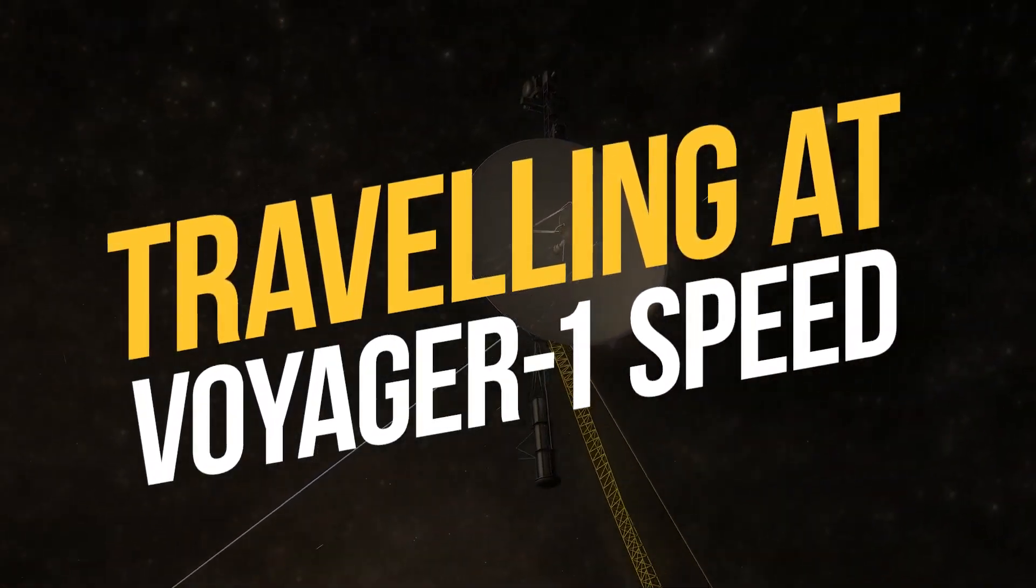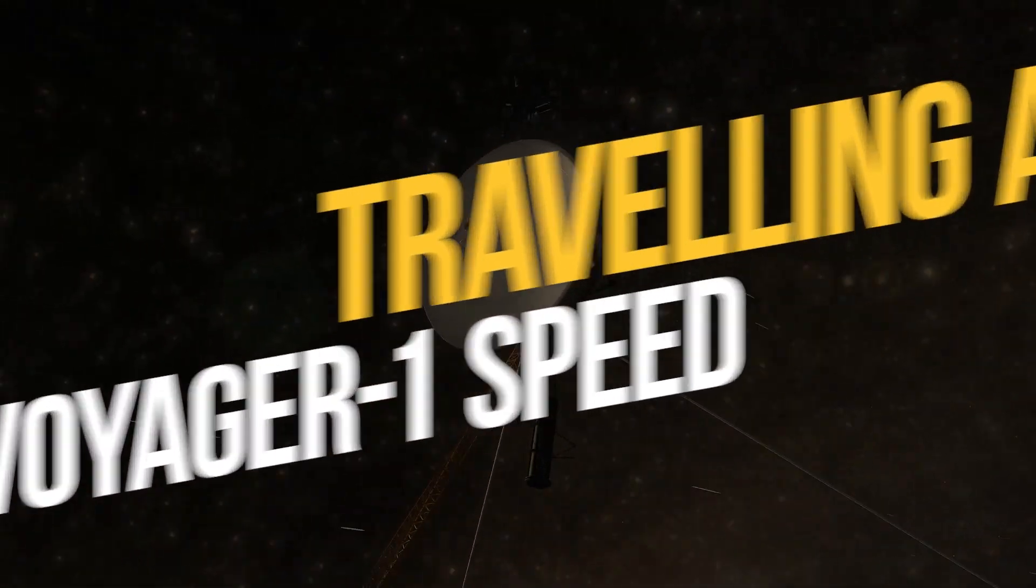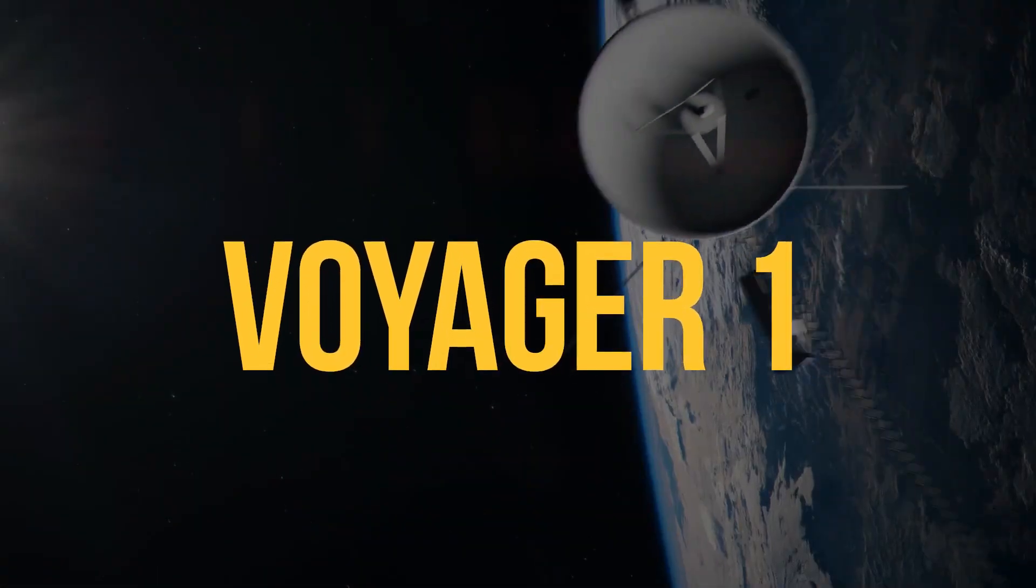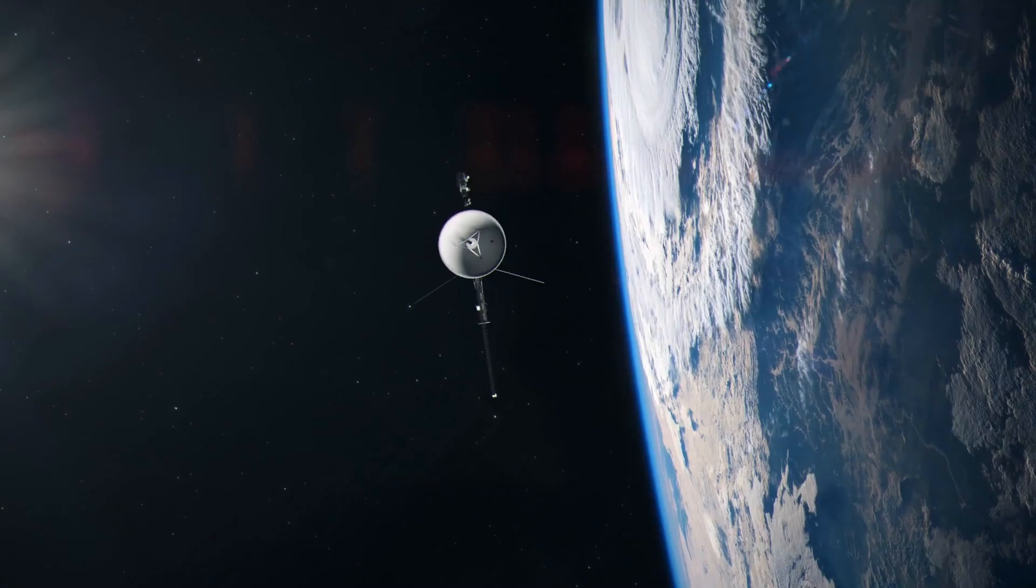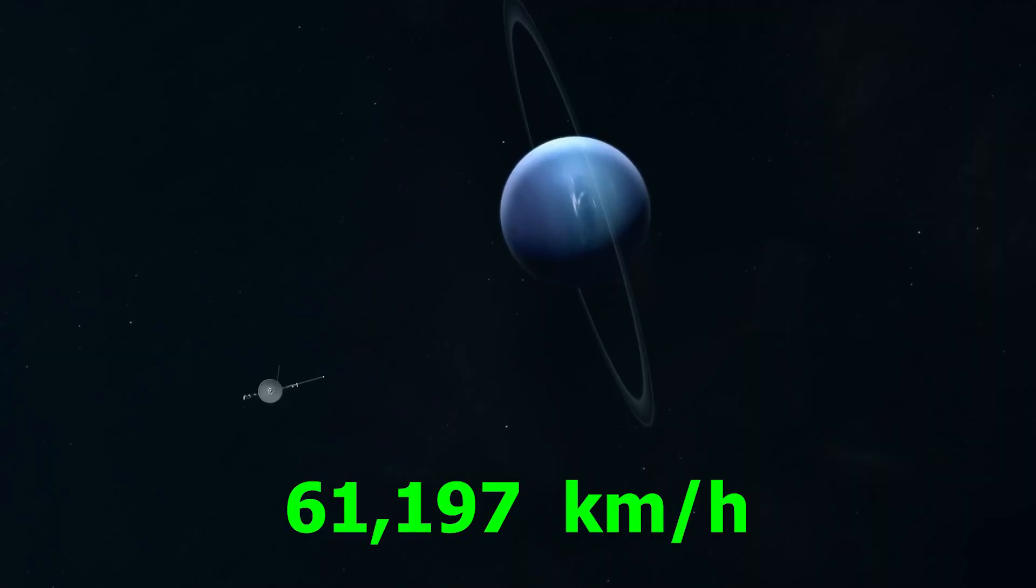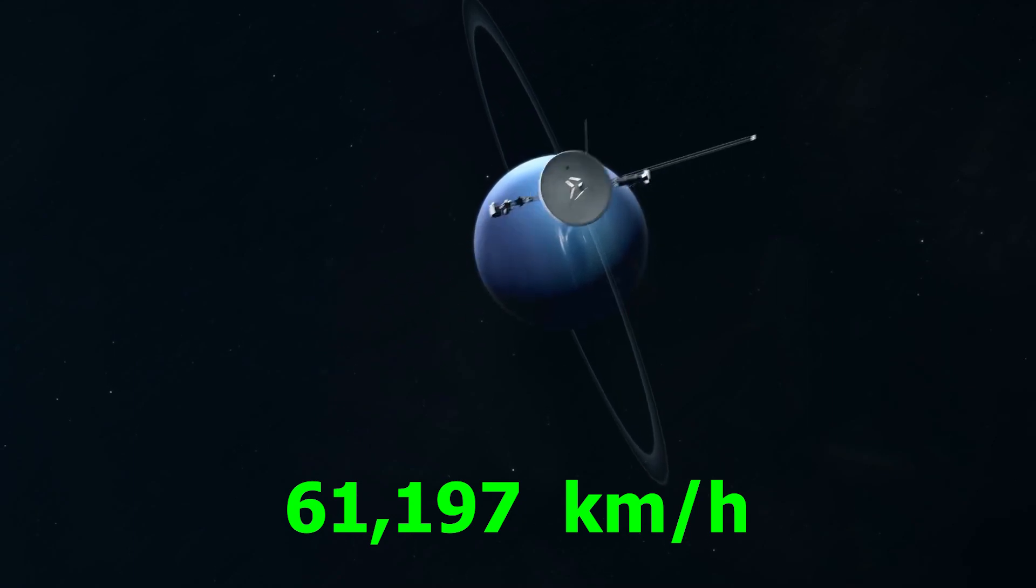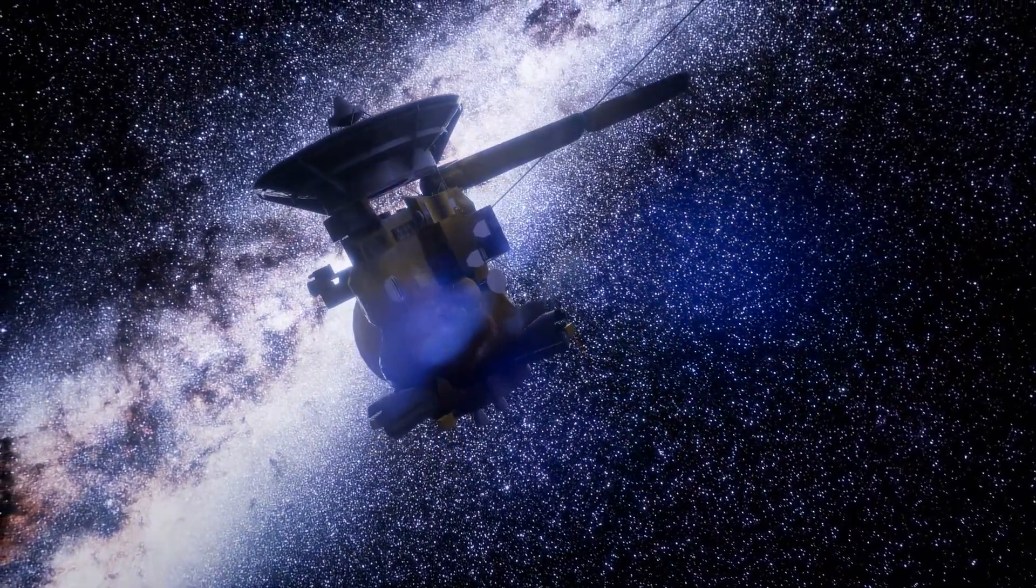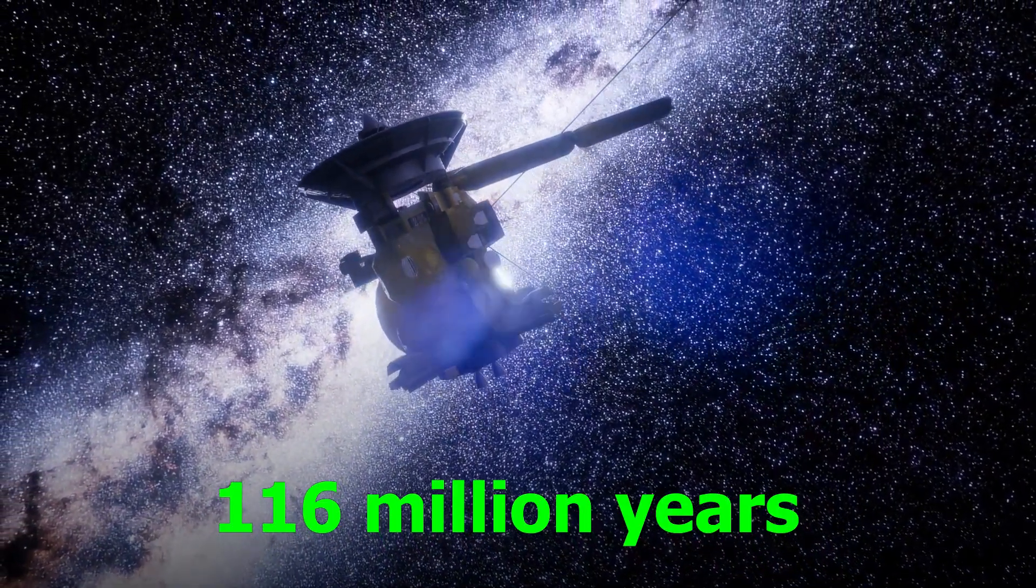Traveling at Voyager 1 speed. Now let's switch gears and look at the same examples, but from the perspective of Voyager 1, the fastest spacecraft ever built. Voyager 1 cruises through space at a speed of 61,197 kilometers per hour. At this remarkable pace, Voyager 1 could make it to the Andromeda galaxy in 116 million years.